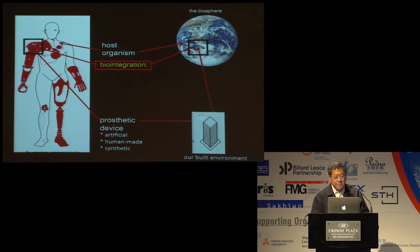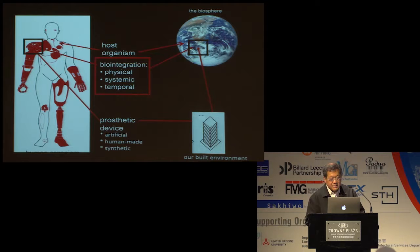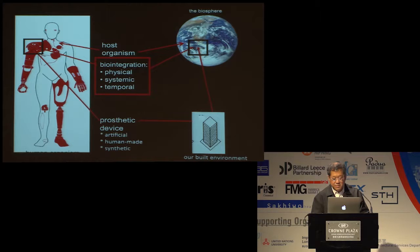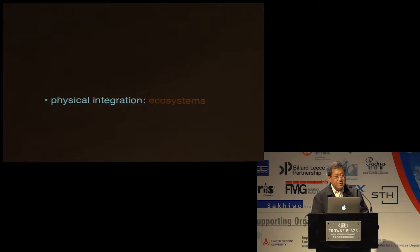I see biointegration at three levels. Physical means connecting one to the other, like a prosthetic device. Systemic is what a lot of doctors are trying to do now — connecting the perceived device to the nervous system so the brain can give instructions to the device to operate. And temporal means the integration over time in the use of resources. Our early work starts to look at physical biointegration and the physical integration with the ecological systems in nature.